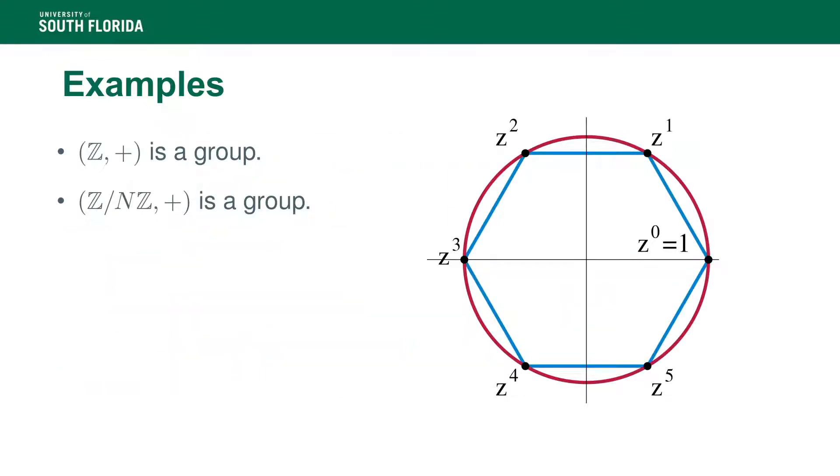There are very simple groups. For example, Z, the set of integers equipped with addition is a group. You can verify that all the essential properties are satisfied. The sum of two integers is also an integer, you have that a minus a equals zero, which plays the role of the neutral element, and a plus b plus c is always equal to a plus b then plus c. So you have many examples of groups here.